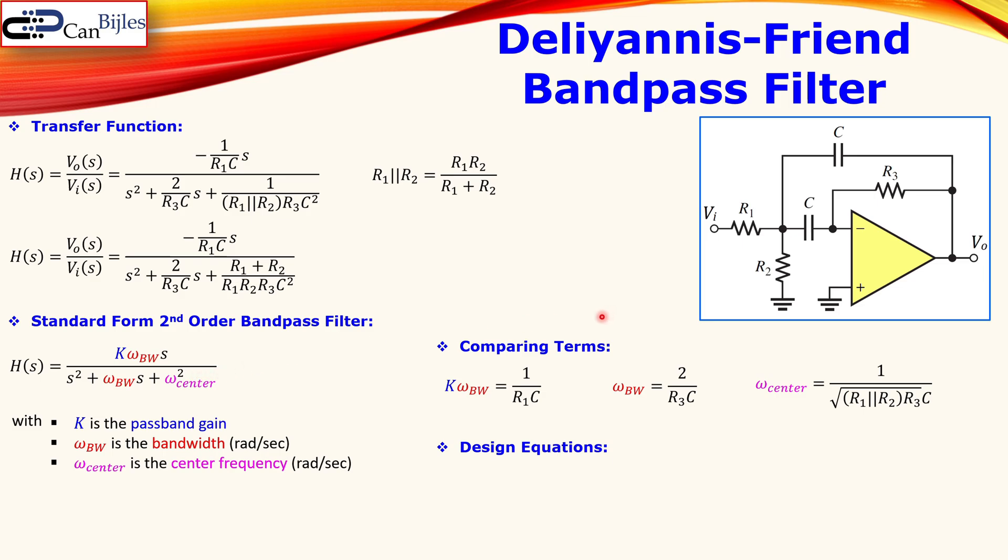Now we need to go to the design equations because that will be useful in order to design our circuit given the specifications here in this example. Now the R3 here can be then worked out using these three equations as this one you see here that 2 times the Q over the omega center and the C. What is this Q? This is the quality factor which is the ratio of the center frequency and the bandwidth. We also have the formula for the R2 again related to Q and in this case also the passband gain.